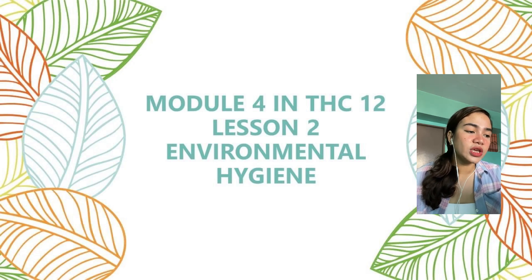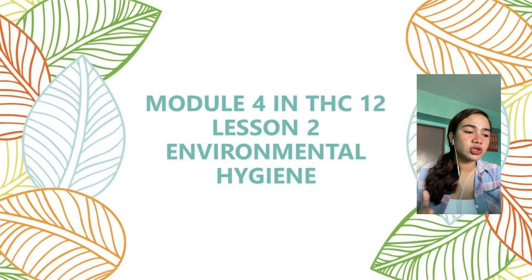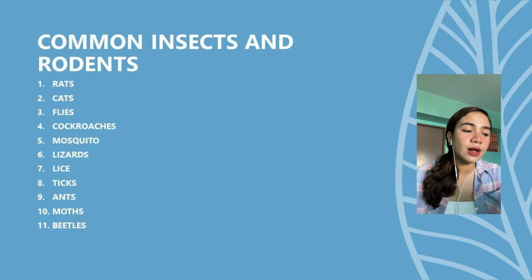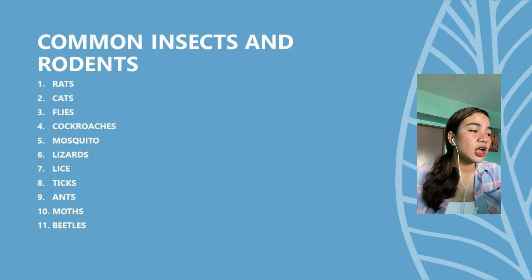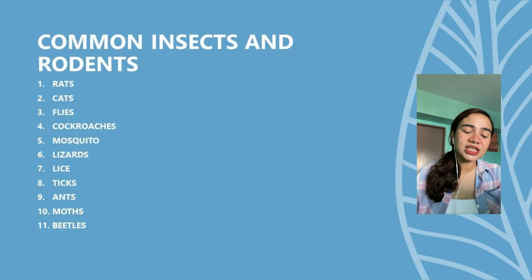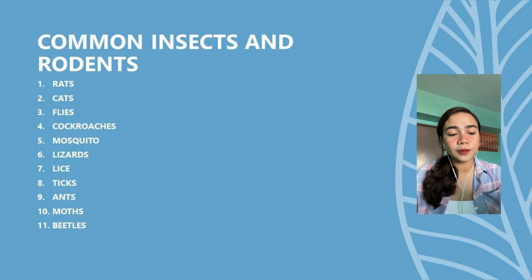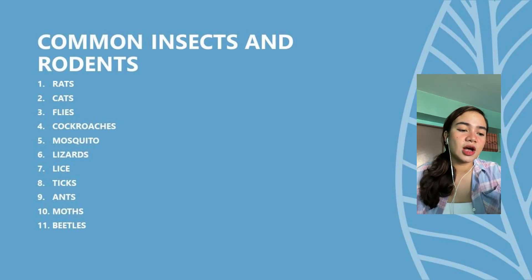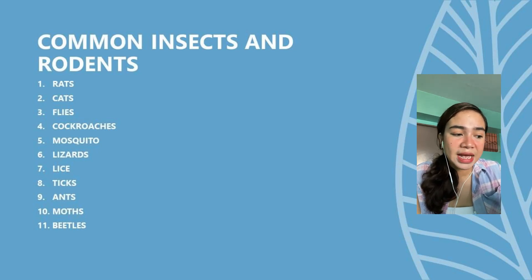First, pest control. Insects and rodents are considered pests in all food establishments. They do not only damage stores and food items, but help spread various microorganisms that can cause serious foodborne illnesses. Common insects and rodents that are a threat to food service establishments include rats, cats, flies, cockroaches, mosquitoes, lizards, lice, ticks, ants, moths, and beetles. The key element to a successful pest control program is prevention. However, no single measure will effectively prevent or control pests, so it takes a combination of three separate activities to keep pests in check.